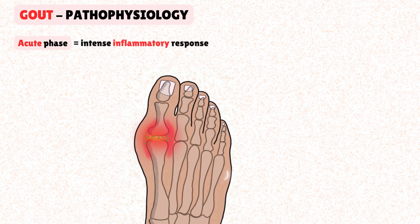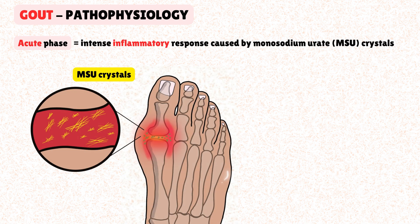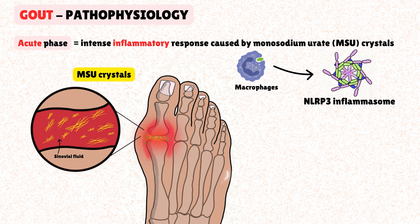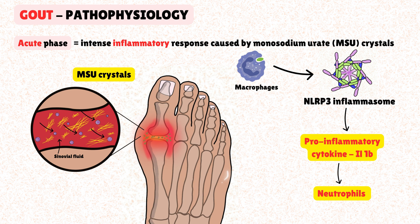An acute gout attack is an intense inflammatory response triggered by the presence of monosodium urate crystals in a joint. It is not caused by the crystals themselves, but by the body's immune reaction to them. The process begins when MSU crystals deposited in the joint due to chronic hyperuricemia are shed into the synovial fluid. Resident macrophages recognize these crystals as a threat, activating a key intracellular complex called the NLRP3 inflammasome. This activation leads to the cleavage and release of the powerful pro-inflammatory cytokine interleukin-1-beta. IL-1β then orchestrates a massive inflammatory cascade, attracting a large number of neutrophils to the joint. These neutrophils attempt to clear the crystals, but in doing so, amplify the inflammatory response by releasing more inflammatory mediators.